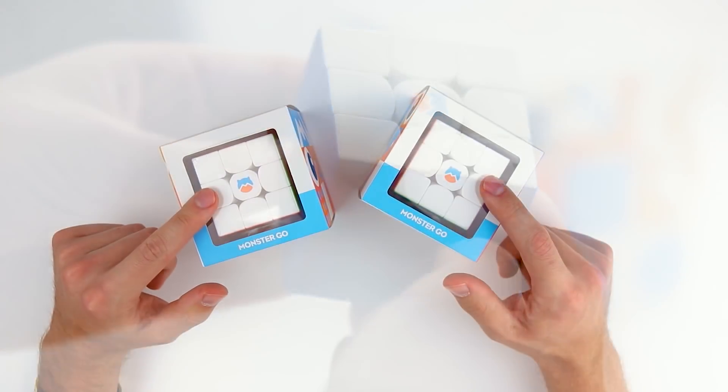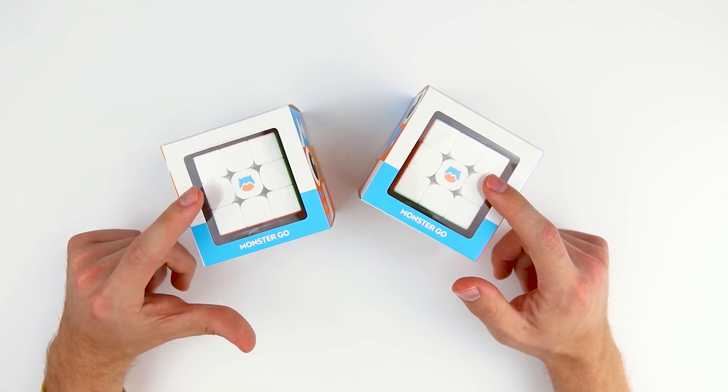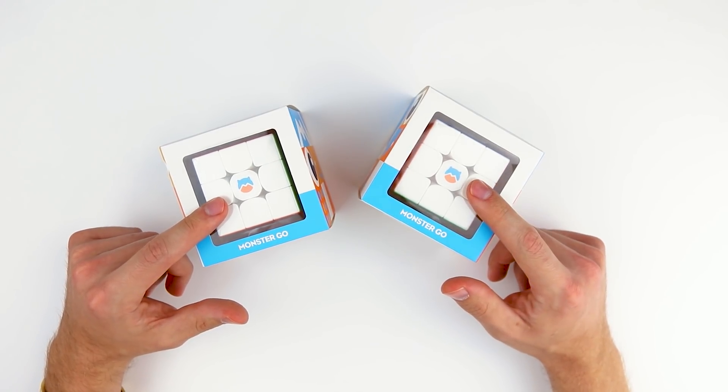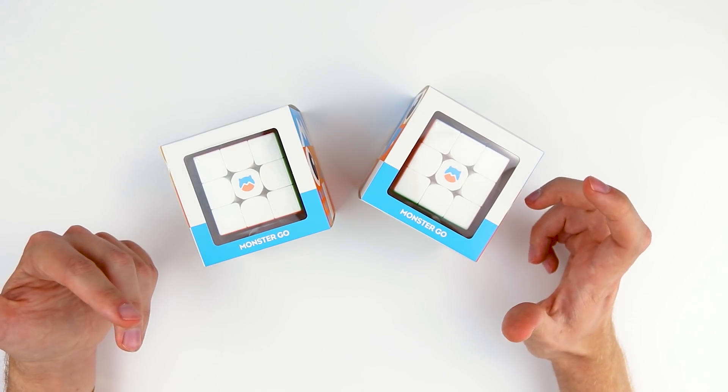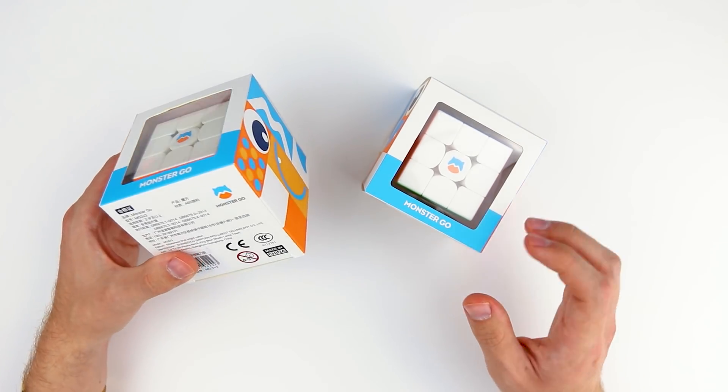So these two guys are going to be the traditional 3x3s. We have a magnetic and a non-magnetic version, and these are going to function just exactly the same as a typical 3x3 speed cube would.